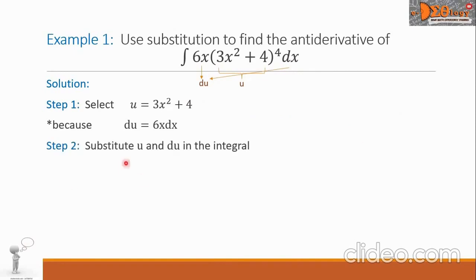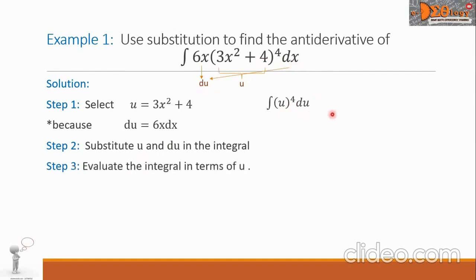Step 2: Substitute u and du into the integral. So 3x squared plus 4 becomes u, raised to the 4th power, and 6x dx equals du. Step 3: Evaluate the integral in terms of u using the power rule. We get u raised to 5 over 5 plus C.